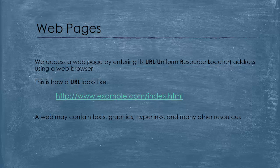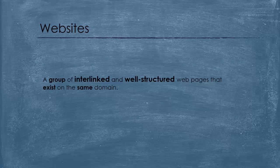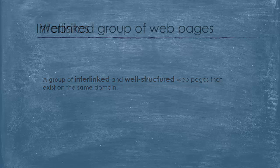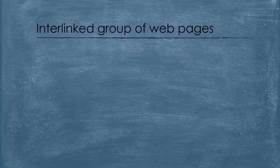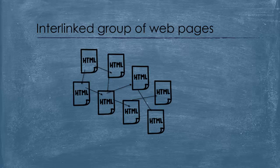The web page may contain text, graphics, hyperlinks to other files. A website, however, is a group of interlinked well-structured web pages that exist on the same domain — that is to say, grouped together in one place. When I say group of interlinked web pages, this picture may cross your mind, and it is correct.